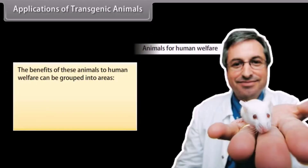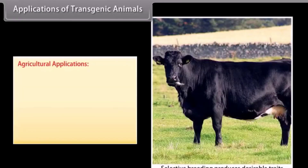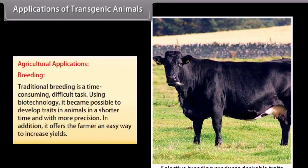The benefits of transgenic animals to human welfare can be grouped into three areas: agriculture, medicine, and industry. Agricultural applications — breeding: traditional breeding is a time-consuming, difficult task. Using biotechnology, it became possible to develop traits in animals in a shorter time and with more precision. In addition, it offers the farmer an easy way to increase yields.